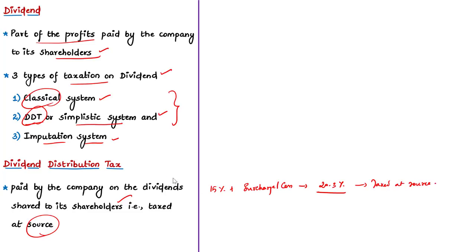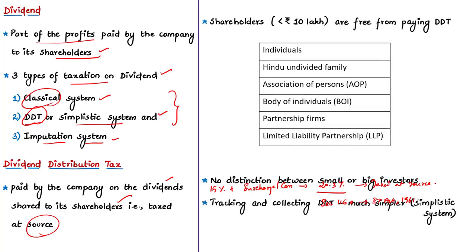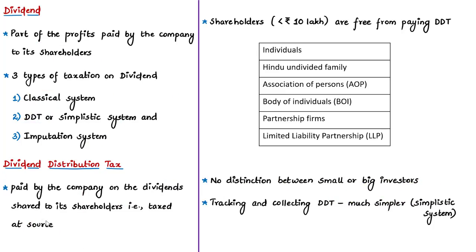Under DDT, the shareholders who received dividends were free from paying the DDT, as mentioned under Section 115 of the Income Tax Act of 1961. Dividends are not subject to tax in the hands of shareholders, except for certain resident taxpayers. If the dividend income exceeds 10 lakh, it attracts an additional tax at the rate of 10%, as per the provisions of the Income Tax Act of 1961.